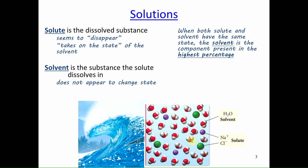When both solute and solvent are in the same state — say both liquids — the one present in the highest concentration is the solvent. For example, in a gin and tonic made mostly with gin and a little water, the gin is the solvent and the water is the solute. If it's mostly tonic water with a little gin, the tonic water is the solvent and the gin is the solute.